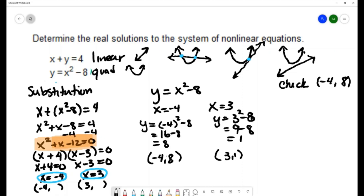In the first equation x plus y equals 4, negative 4 plus 8 equals 4, and I get 4 equals 4 and that's a true statement.